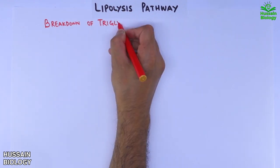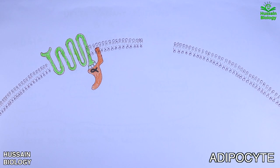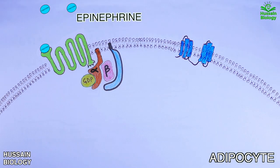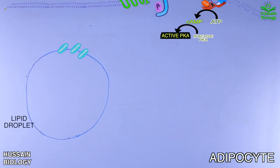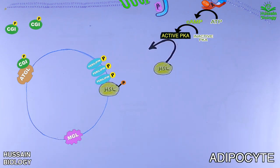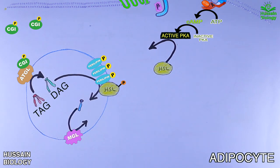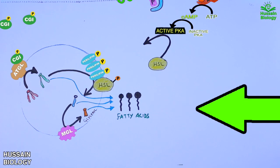First, let's recap the lipolysis pathway. When we had low levels of glucose, GPCR pathways are driven which activates several enzymes that hydrolyze triacylglycerides into diacyl and monoacylglycerides, and then eventually at the end we get free fatty acids in the cytoplasm of the adipocyte.